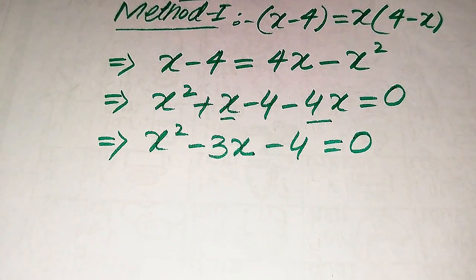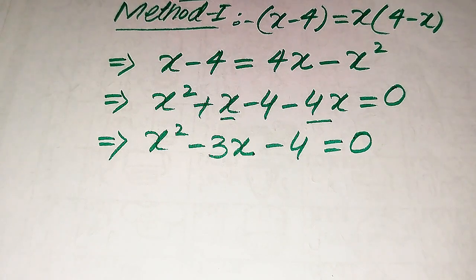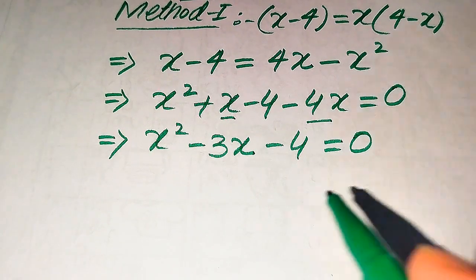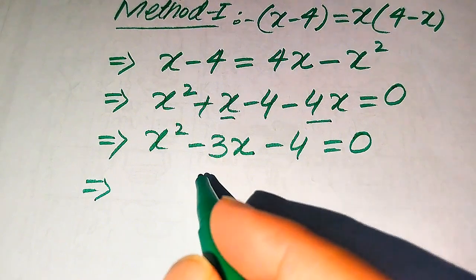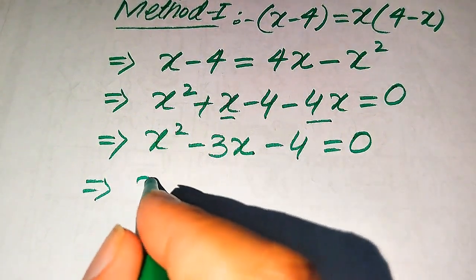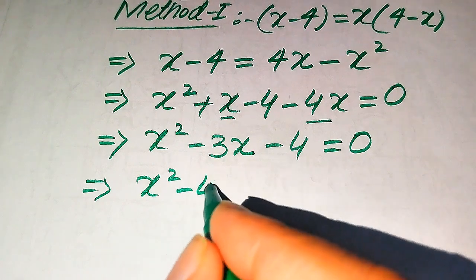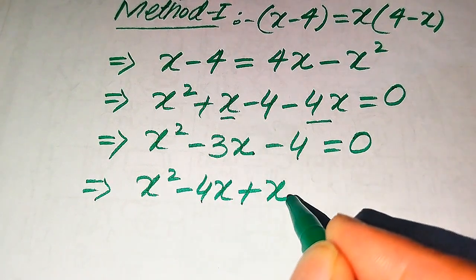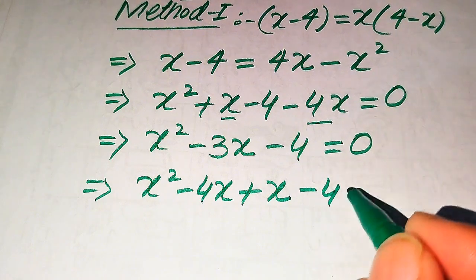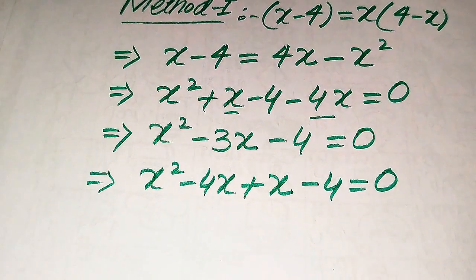This equation is now a quadratic equation in x. There are three methods to solve a quadratic equation: factorization, completing the square, and the quadratic formula. Here we can easily factor this equation, so we break the middle term: minus 3x becomes minus 4x plus x, giving x squared minus 4x plus x minus 4 equals 0.